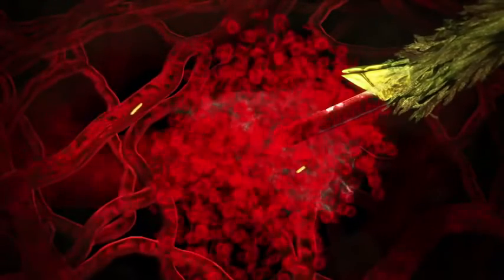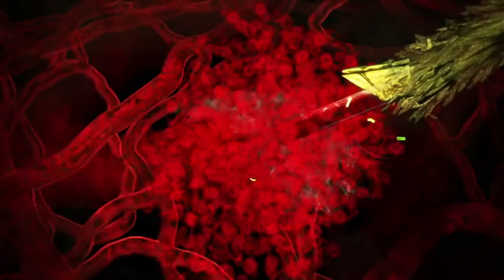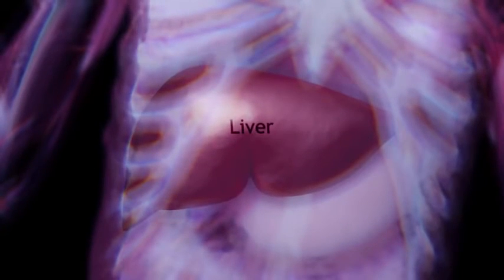The parasite rides the bloodstream like a network of roads seeking its first target. The core of your body's blood filter system, the liver.